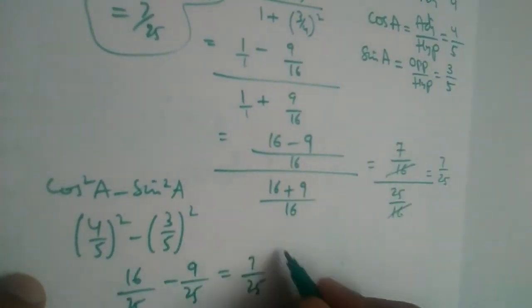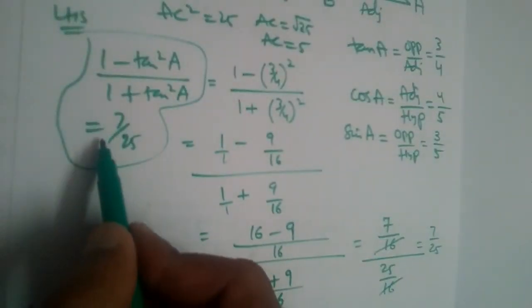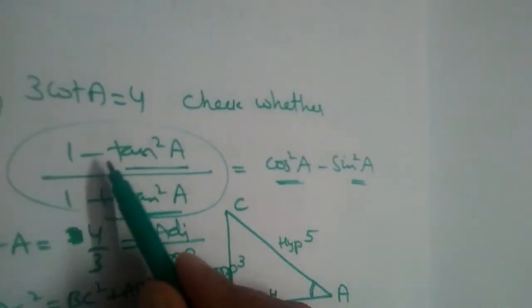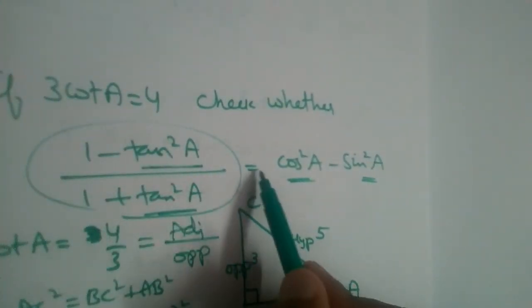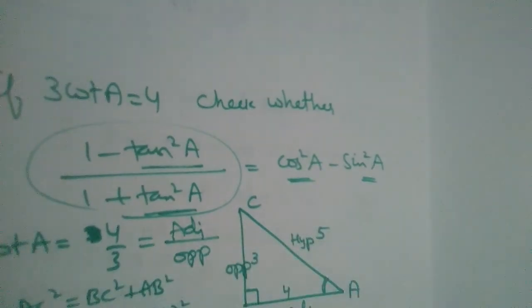LHS is 7/25 and RHS is also 7/25. Therefore, (1 - tan²a) / (1 + tan²a) is equal to cos²a - sin²a. Verified.